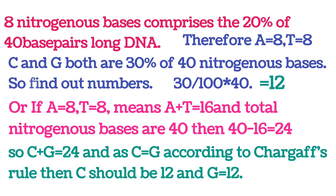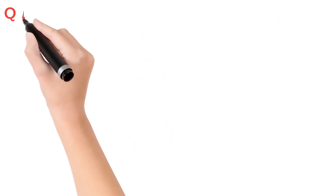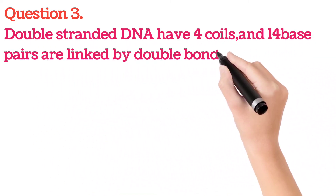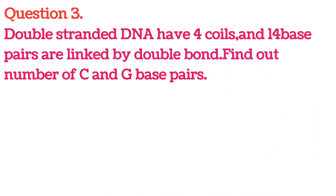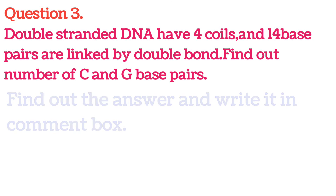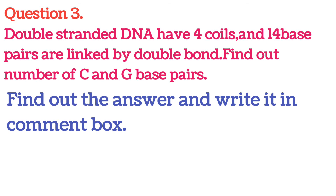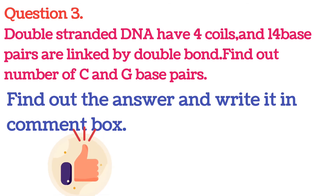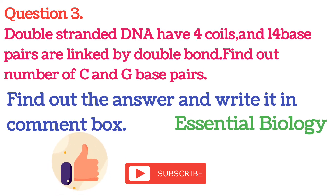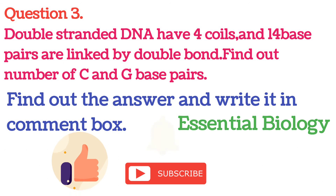Question number three: A double-stranded DNA has four coils and 14 base pairs linked by double bonds. Find out the number of C and G base pairs. Try to solve this question and write your answer in the comment box. Please subscribe, like, and share this video — thank you.